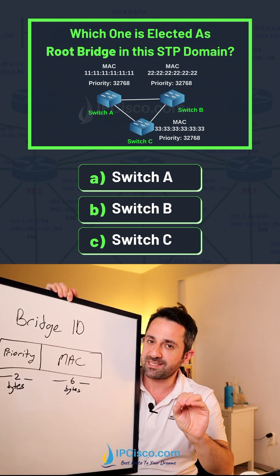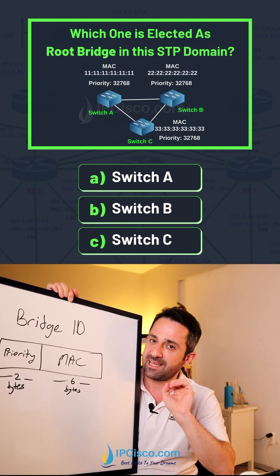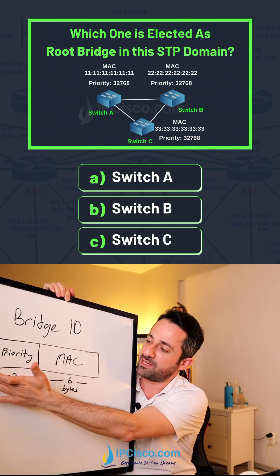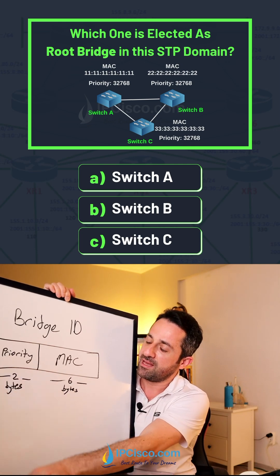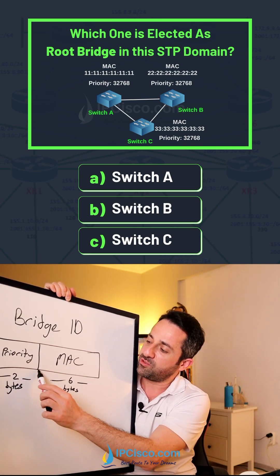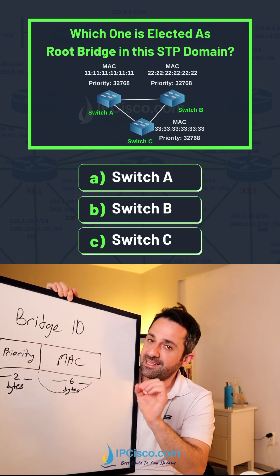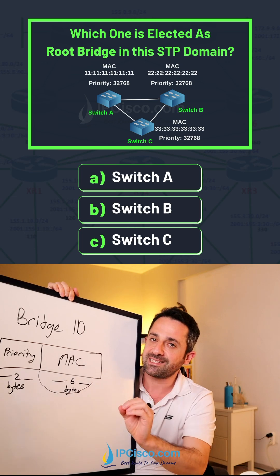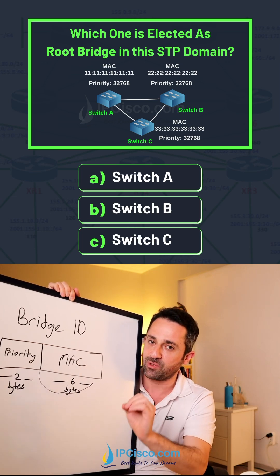For this question, all the switches have the same priority values, so we need to check the MAC address. The switch that has the lowest MAC address will be elected as the STP root bridge.